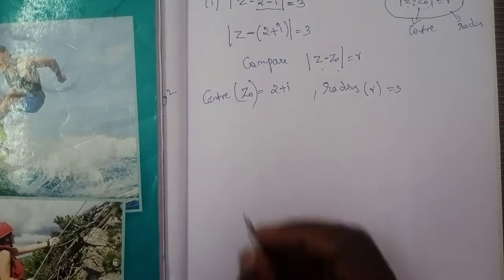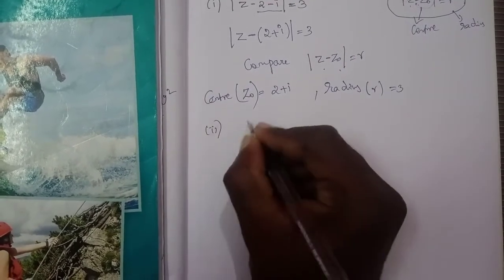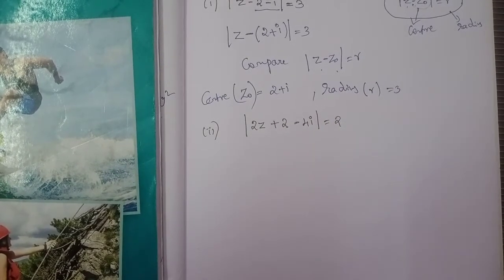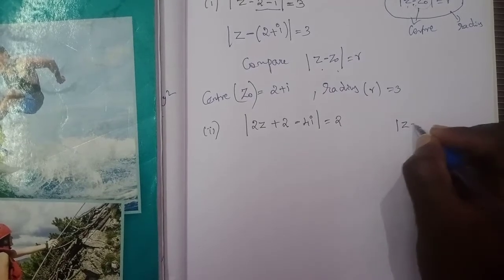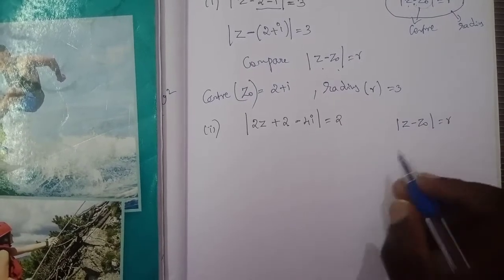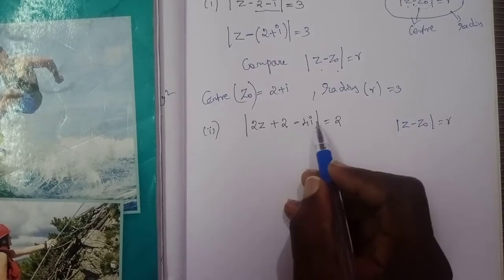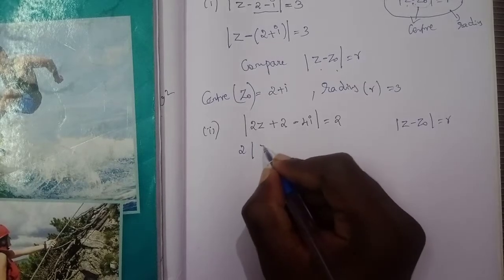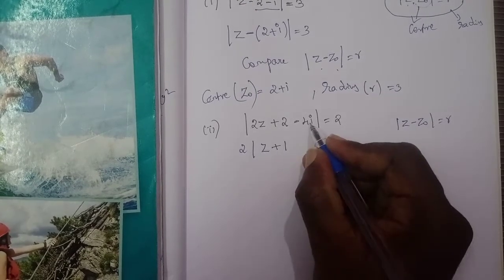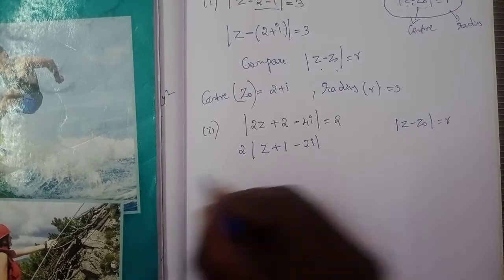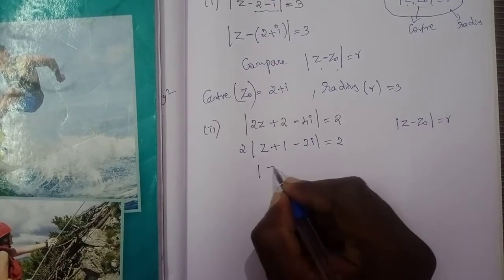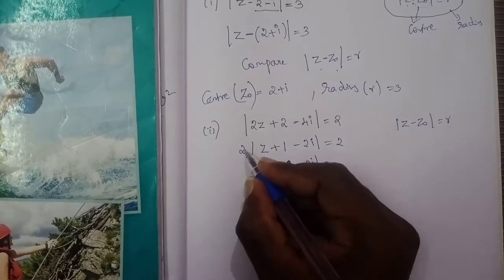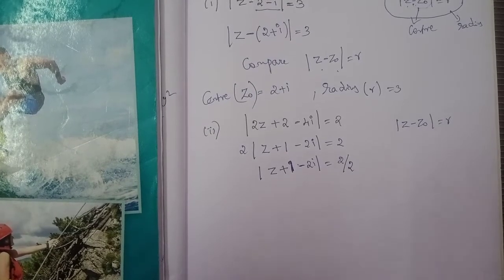Next is sub-division 2. The second sub-division: modulus of 2z plus 2 minus 4i is equal to 2. Comparing with the standard form modulus of z minus z₀ equal to r, since 2z appears, we take out the factor of 2. Modulus of 2 divided gives modulus of z plus 1 minus 2i equal to 2 by 2, which is 1.